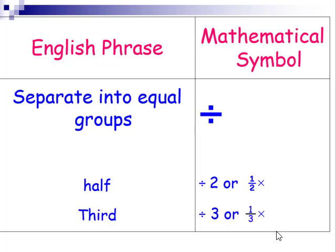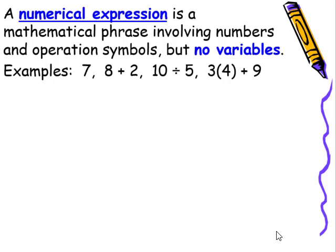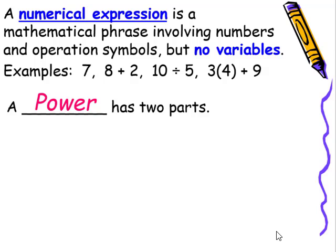A numerical expression is a mathematical phrase involving numbers and operation symbols, but no variables. Examples are like just the number seven would be a numerical expression, eight plus two, ten divided by five, three times four plus nine. The one numerical expression that we've seen earlier in this course is a power. Power has two parts.